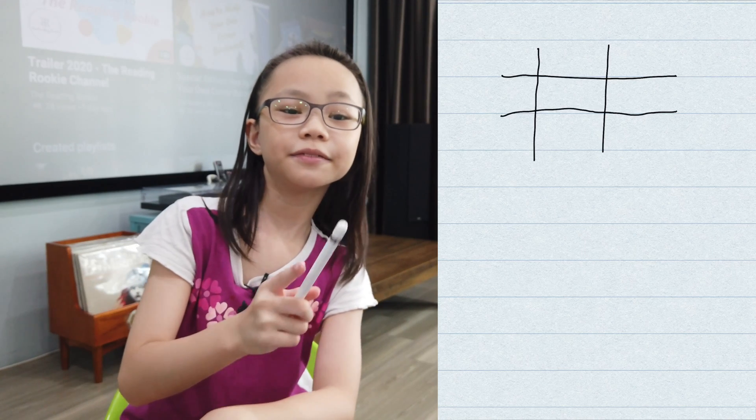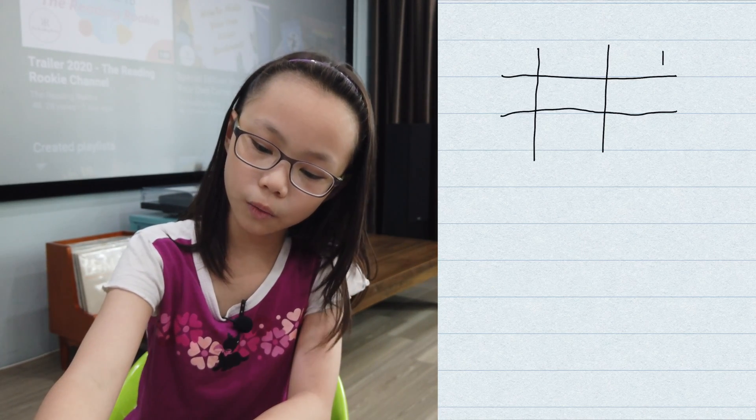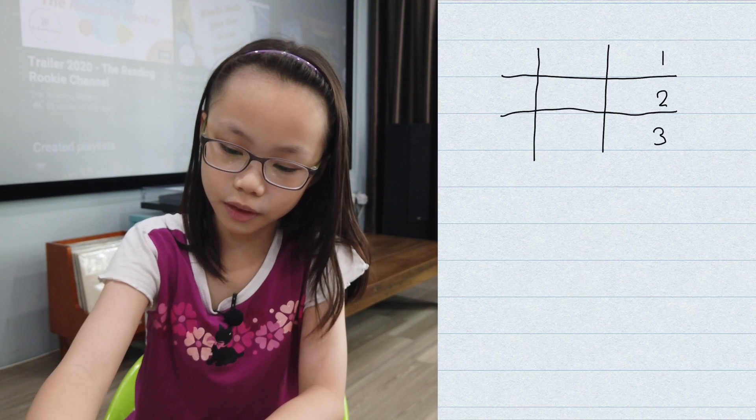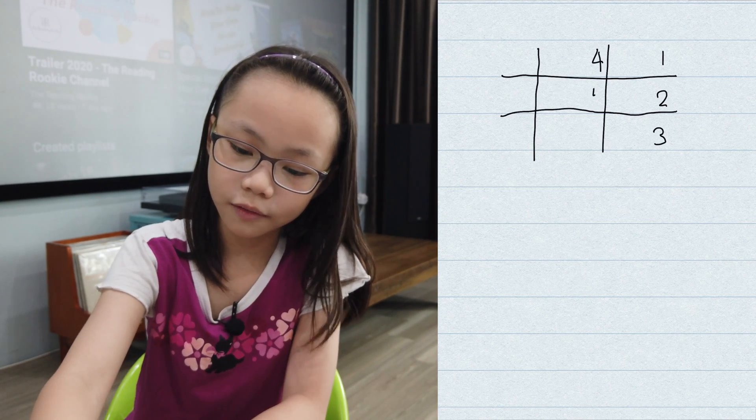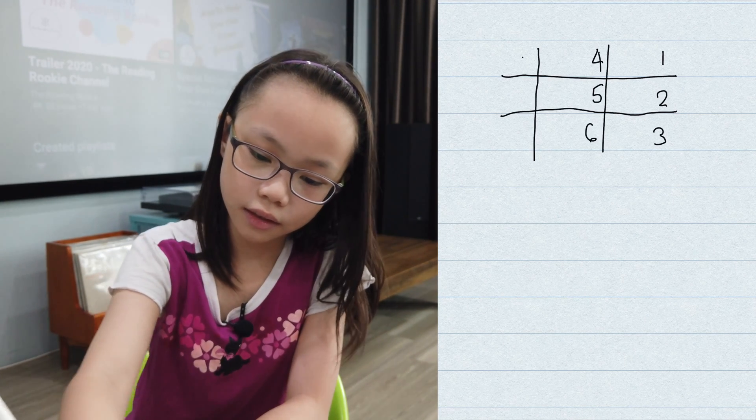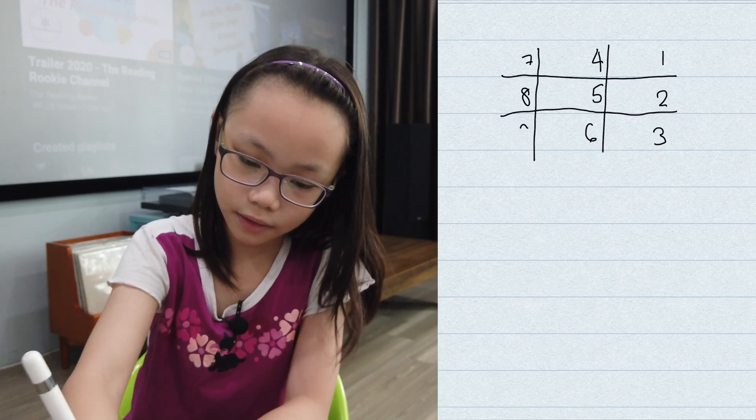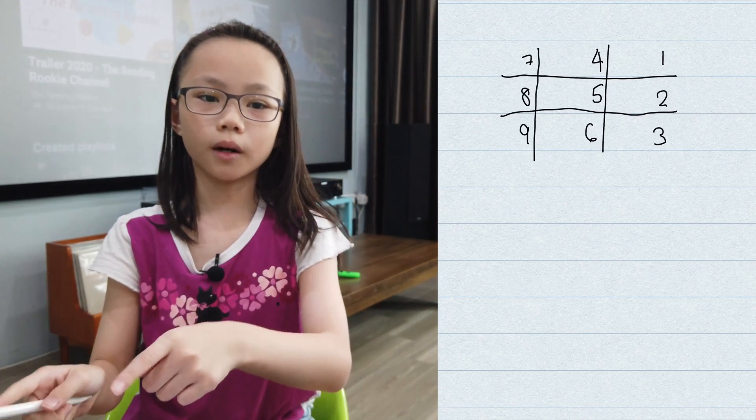This one is different. We need to write the numbers 1, 2, 3, 4, 5, 6, 7, 8, and 9. But this time, they'll be on the opposite sides.